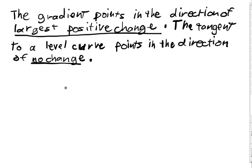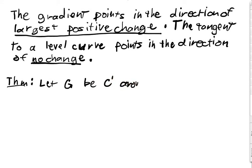And again we can sum this all up in a theorem, which we've already essentially proven with that calculation. Let g be a C1 function around some point x naught, y naught. And suppose that your gradient's not zero. So that is, it's a regular point.